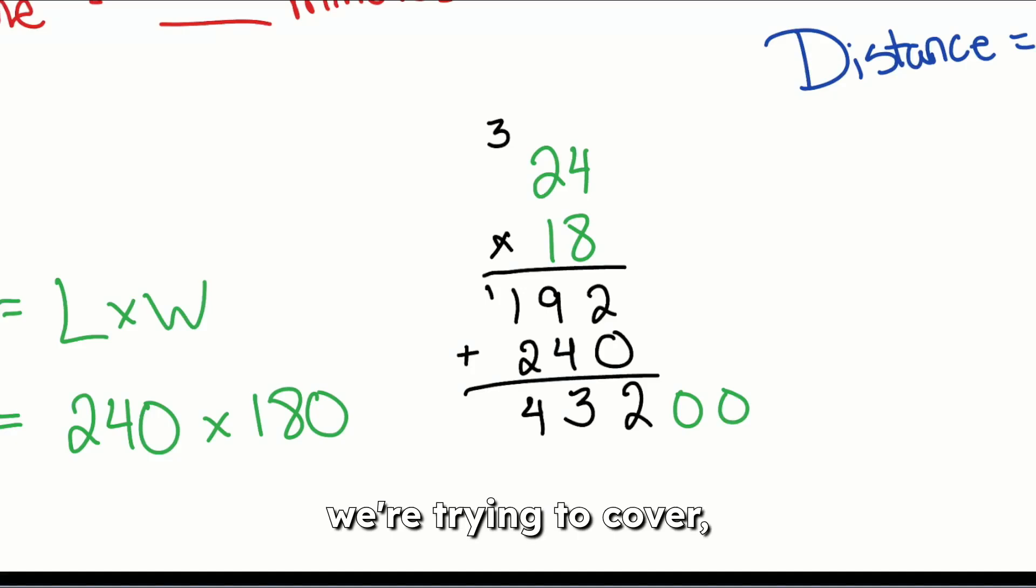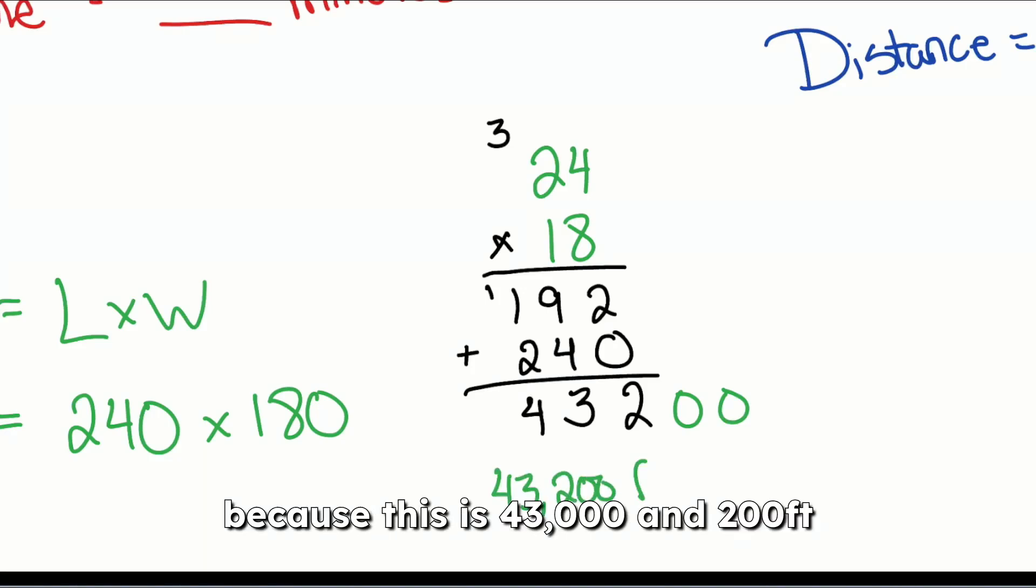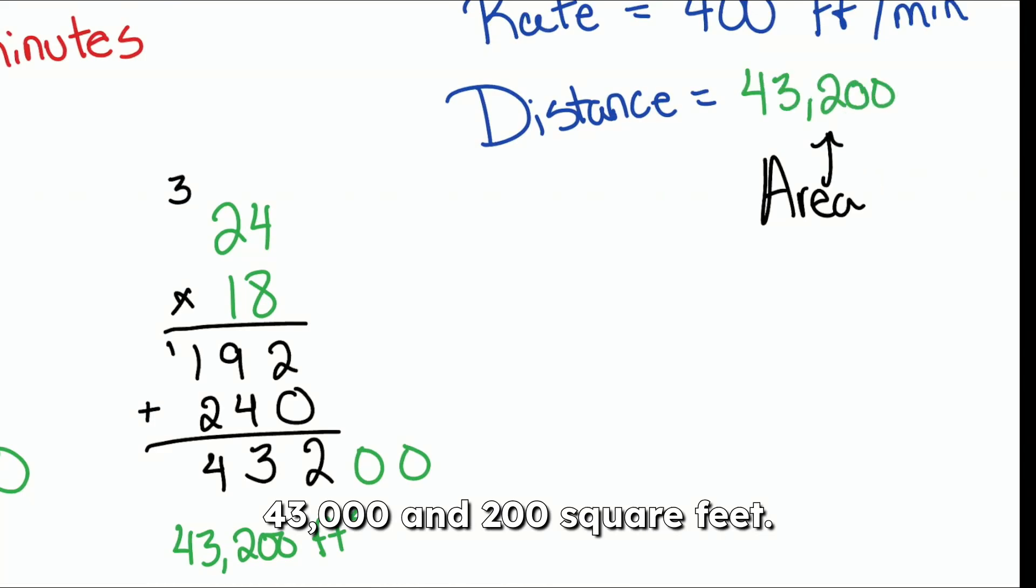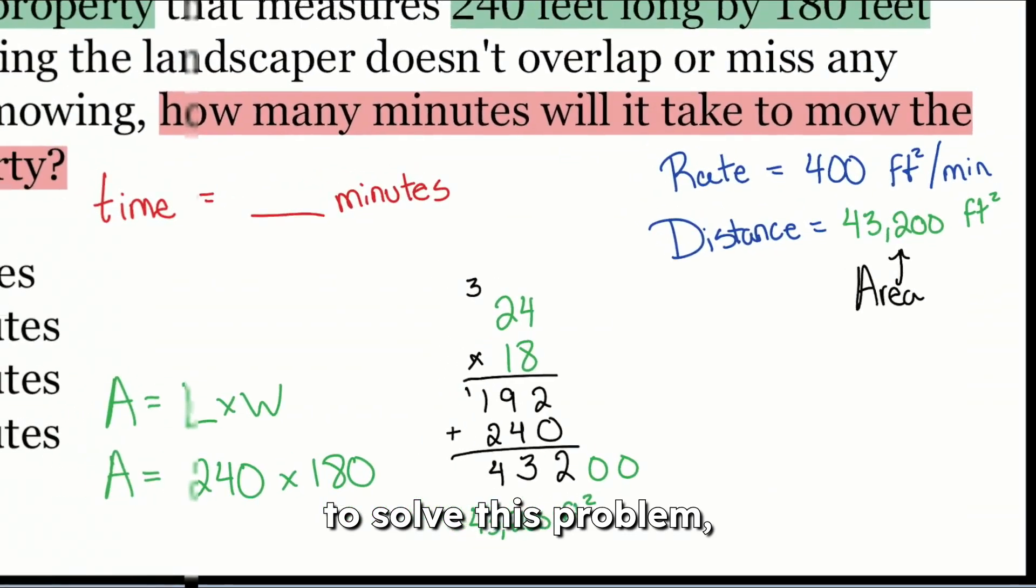That is the distance that we're going to cover because this is 43,200 feet squared. And there we are. So the distance that we're covering again, 43,200 square feet. We have everything we need now to solve this problem, and we're good.